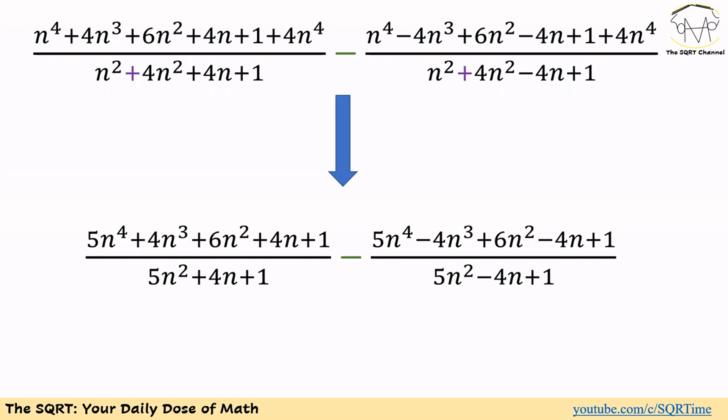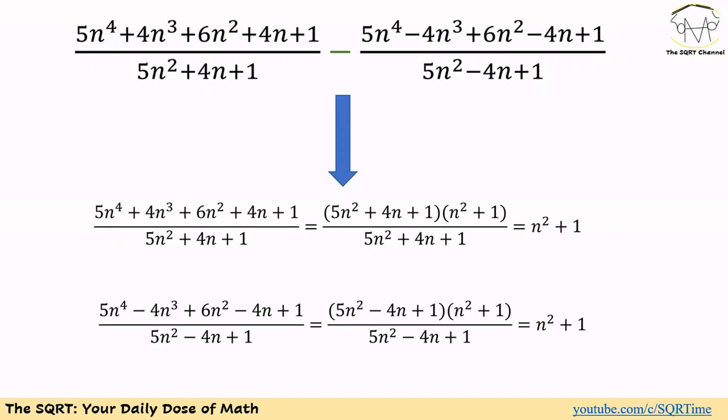If you check the numerator for the first term and the numerator for the second term, you can see that we have the same terms but some signs are negative. This is actually the case for the denominators as well. Now let's simplify them further. Let's focus on the first term: we are going to factor 5N⁴ plus 4N³ plus 6N² plus 4N plus 1 and write it as a multiplication of two terms.